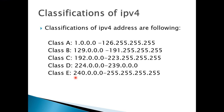Now we will see the classification of IPv4. There are five classes of IP address. We will discuss class A, class B, class C, class D, and class E. Class A IP address range is 1.0.0.0 to 126.255.255.255.